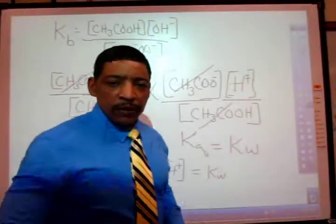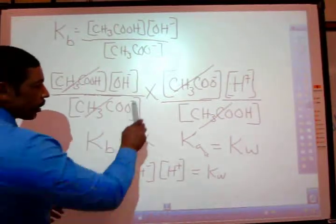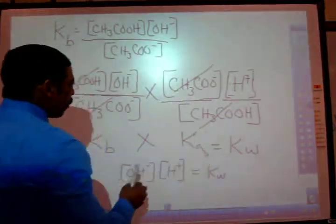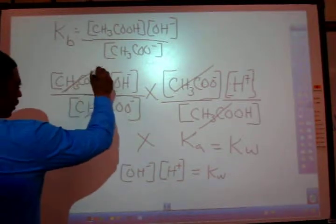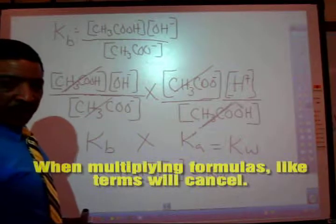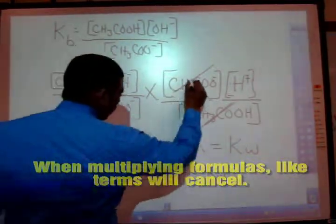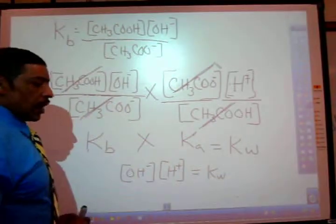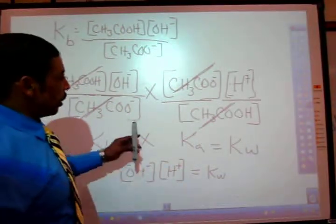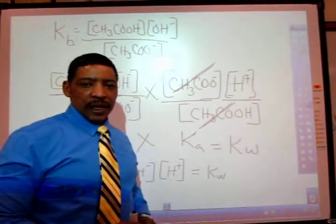When we multiply our Kb expression times our Ka expression, we may cancel the acetic acid in each expression as well as the acetate in each expression. That leaves us with concentration of hydroxide and concentration of hydrogen ion.